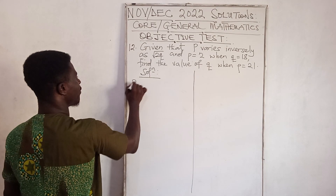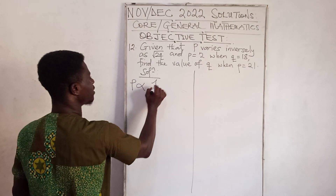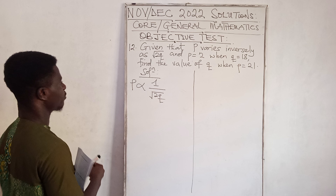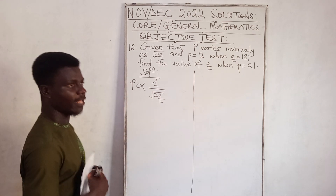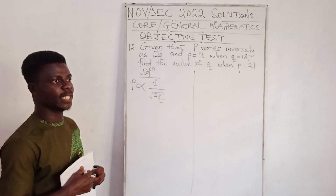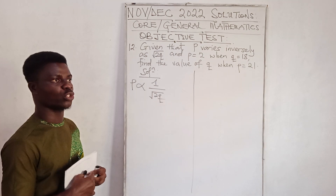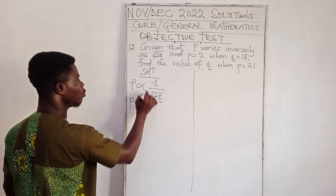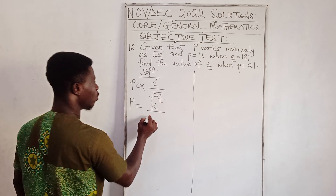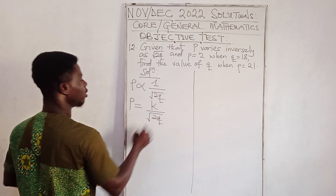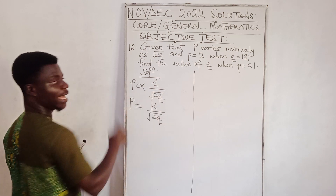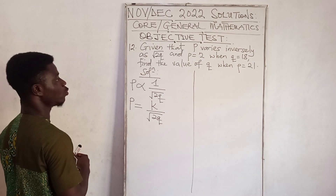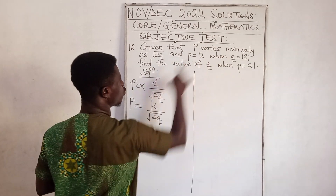Since P varies inversely as √(2K), we write P is proportional to 1 over √(2K). Changing the proportional sign to an equal sign and introducing the constant of proportionality K, we get P equals K over √(2K).